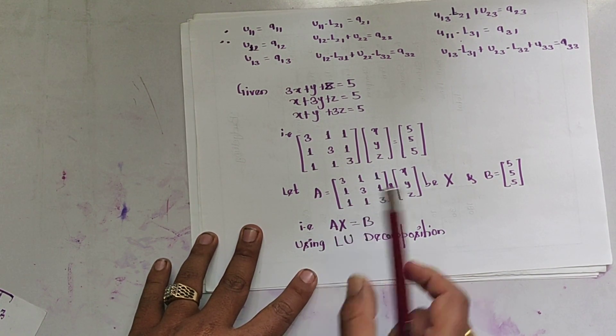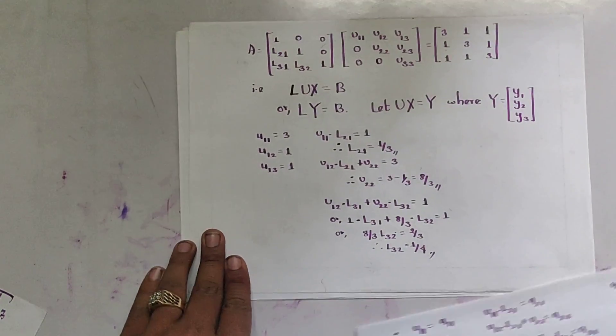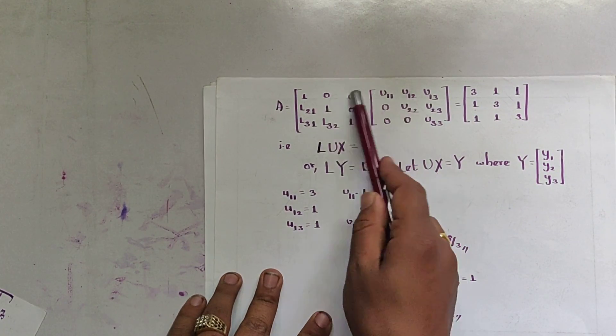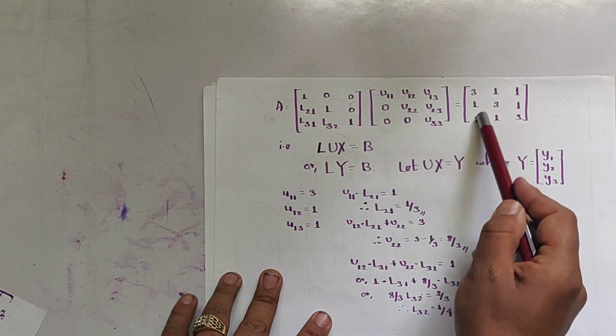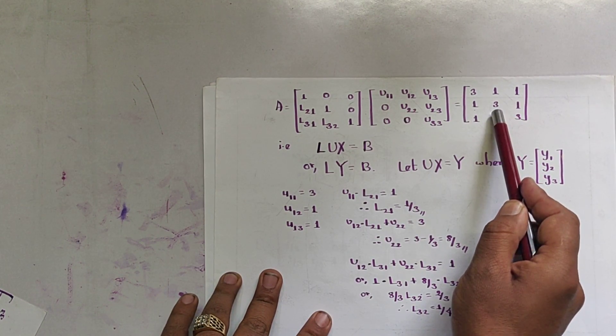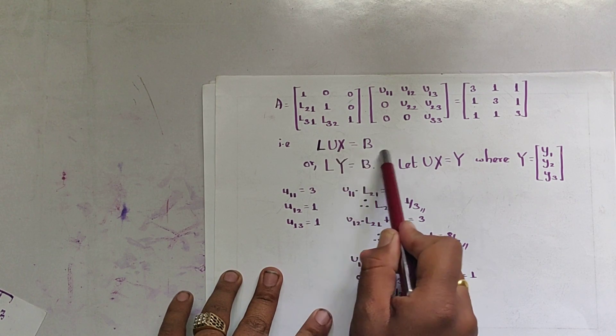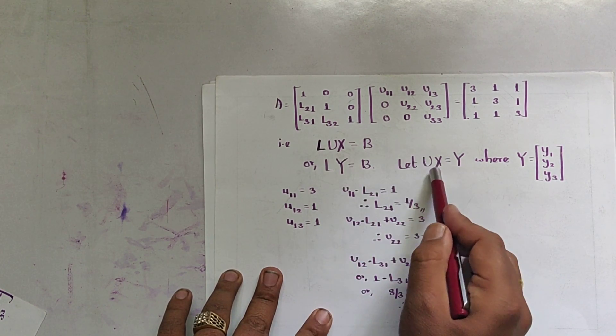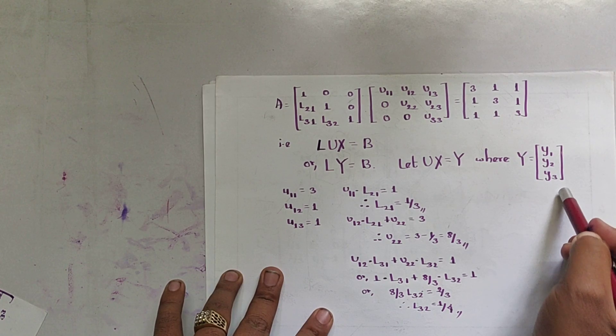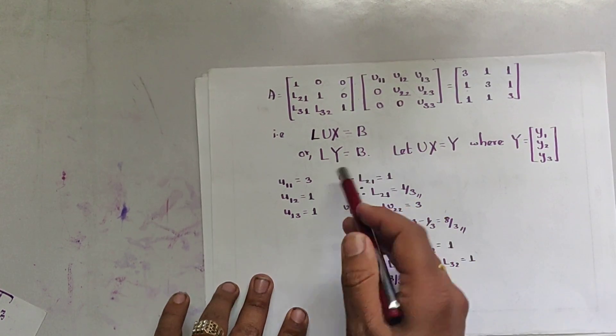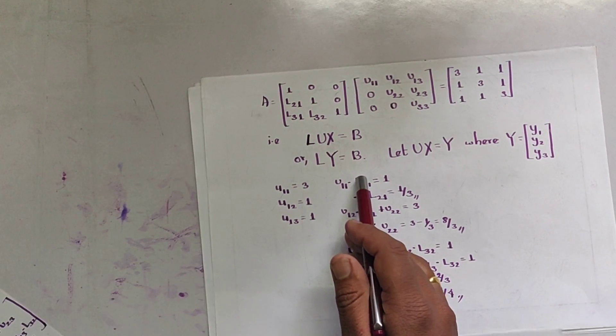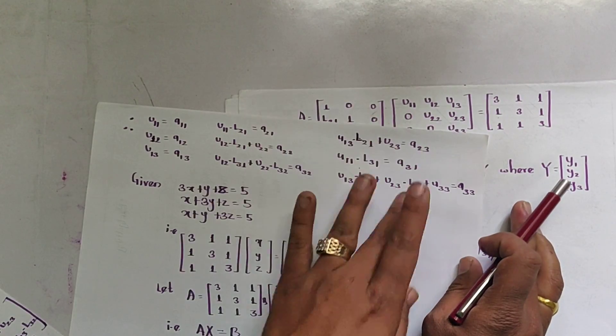By using LU decomposition or Doolittle method, A matrix is decomposed into these two matrices and its multiplication gives A matrix. It is LUX = B and we suppose UX = Y where Y is Y1, Y2 and Y3, and LY = B. By using the previous formula...